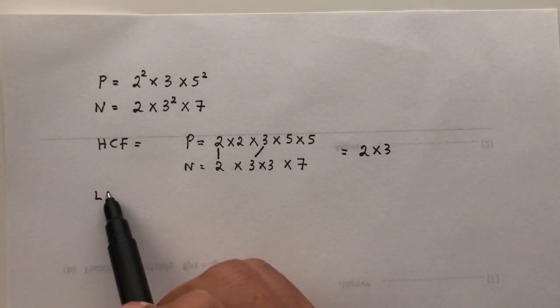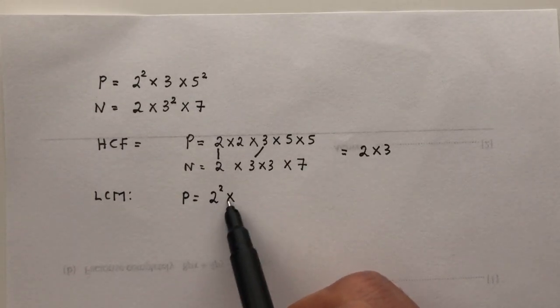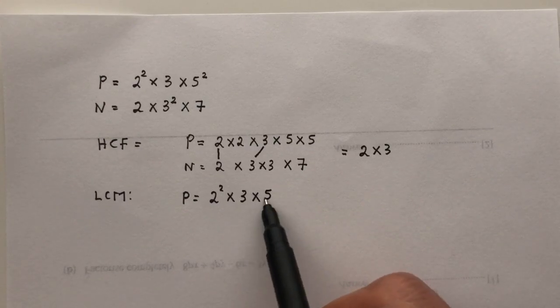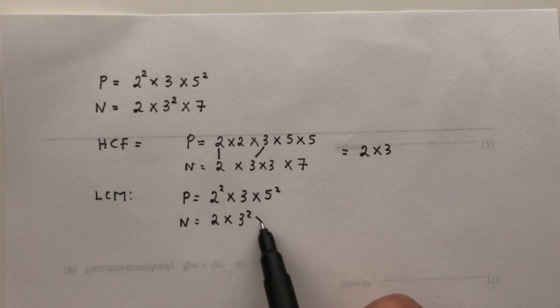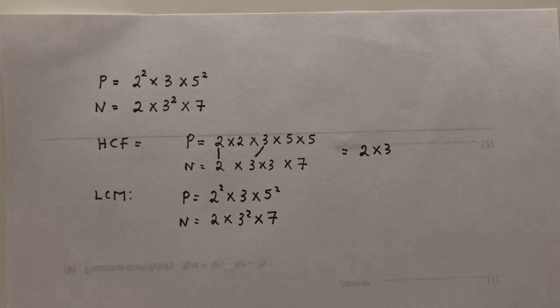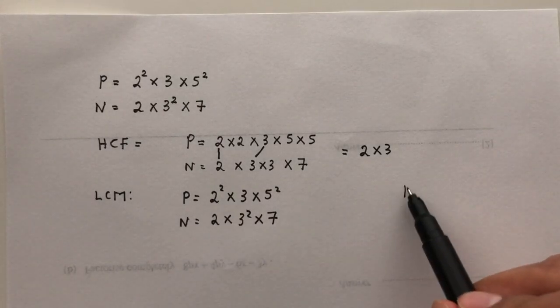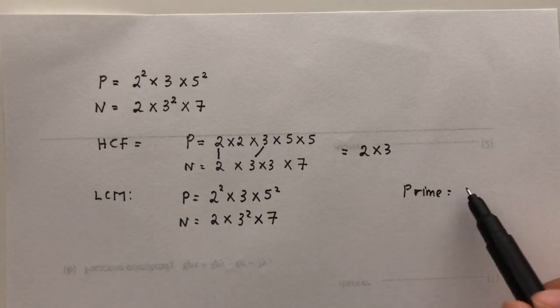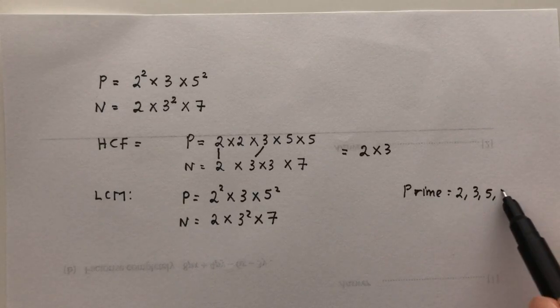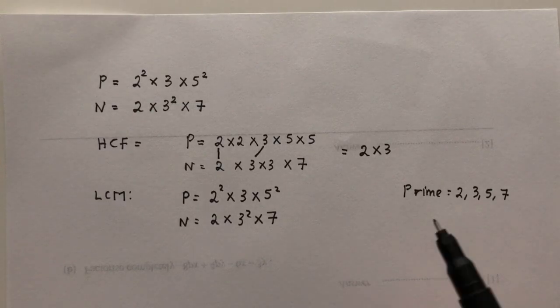Now, how do you find the LCM? LCM, we have P is equal to 2 power 2 times 3 times 5 power 2, N is equal to 2 times 3 power 2 times 7. Okay, so how do you find the LCM of two numbers? So you have to observe what prime factors we have here. We have prime numbers: 2, 3, 5, and 7.